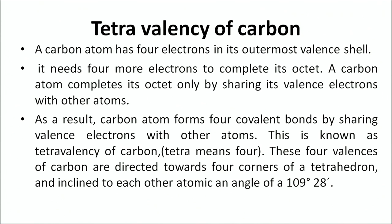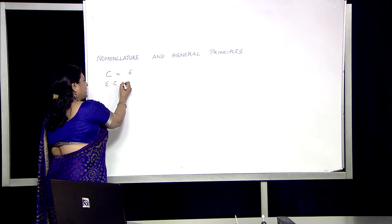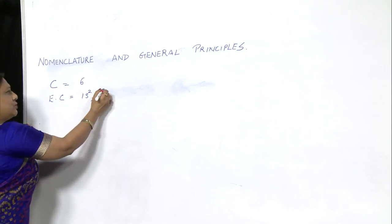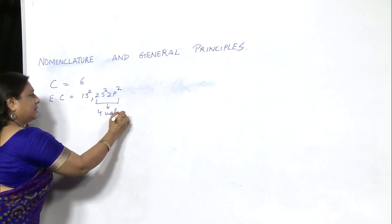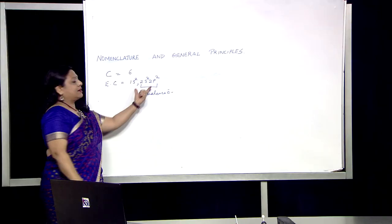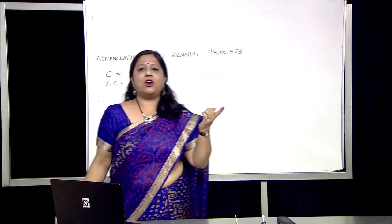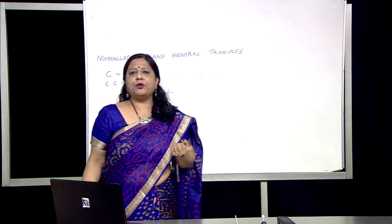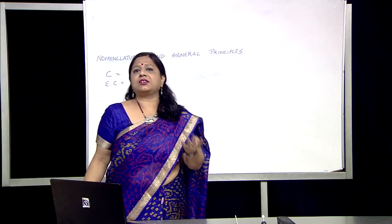One more important property of carbon is tetravalency. A carbon atom has four electrons in its outermost valence shell. Carbon has atomic number six, so when we write the electronic configuration it is 1s2, 2s2, 2p2. These are the four valence electrons in carbon. Now carbon needs four more electrons to complete its octet — either it will take four more electrons or it can give four electrons to satisfy its octet.